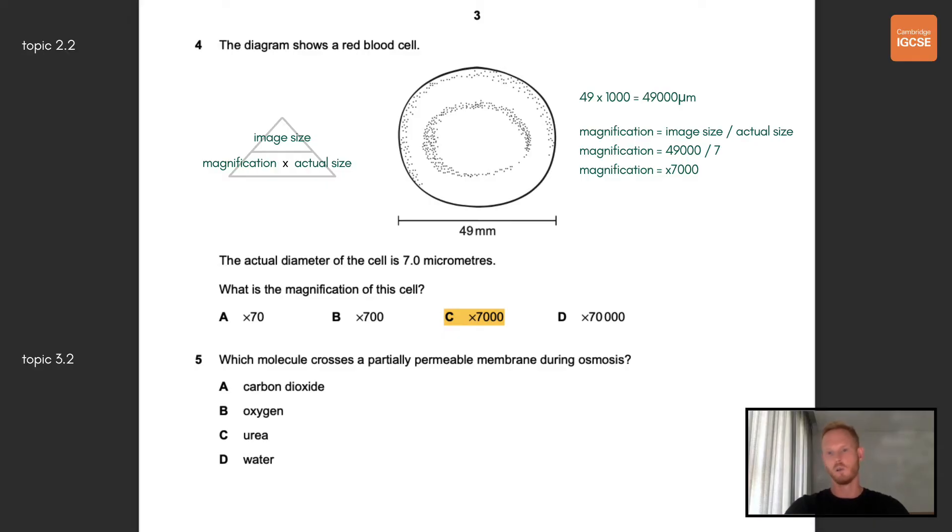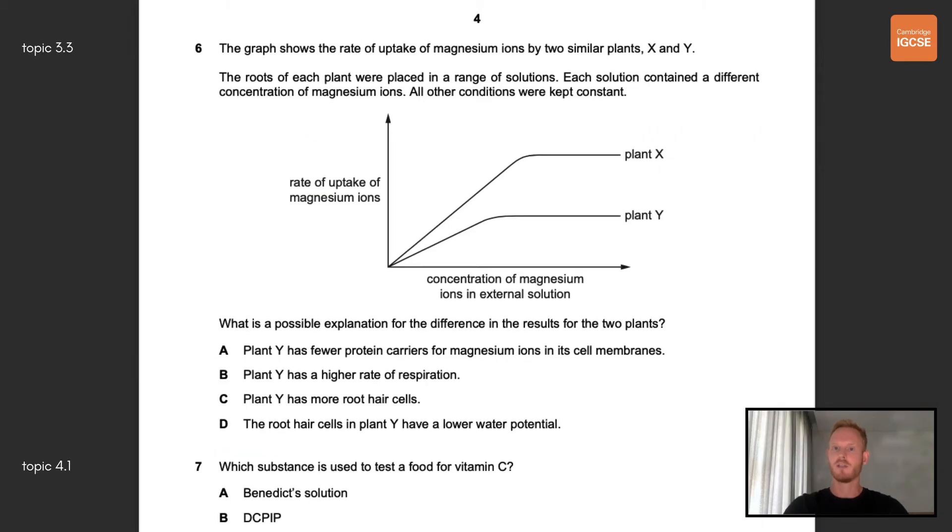Number five, which molecule crosses a partially permeable membrane during osmosis? The correct answer here is of course D, water. Number six, the graph shows the rate of uptake of magnesium ions by two similar plants X and Y. What is a possible explanation for the difference in results for the two plants? The correct answer here is A. Plant Y has fewer protein carriers for magnesium ions in its cell membranes. Since ions are absorbed from the soil by active transport, fewer protein carriers would limit the rate of uptake.